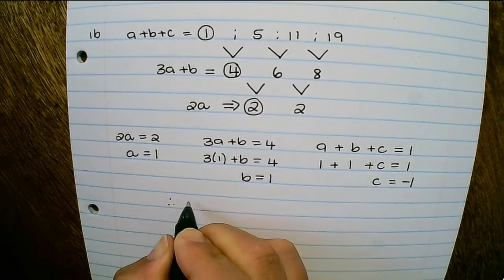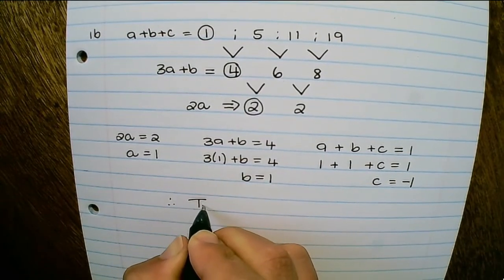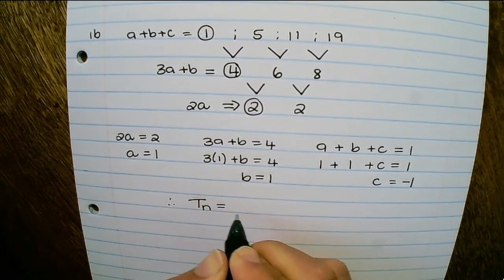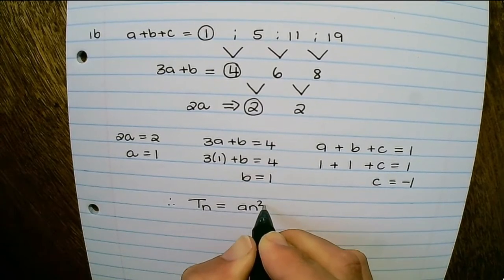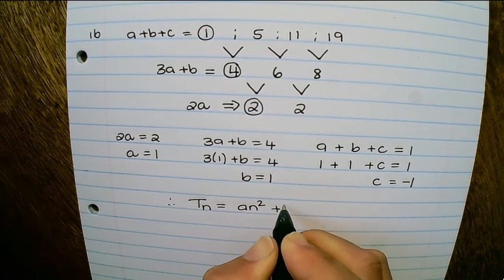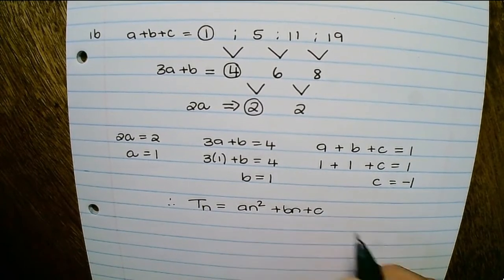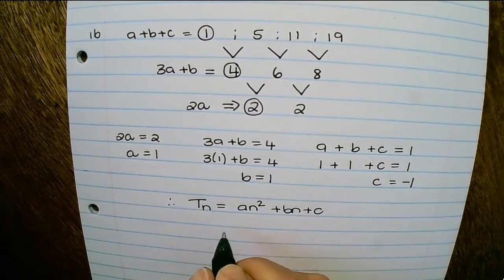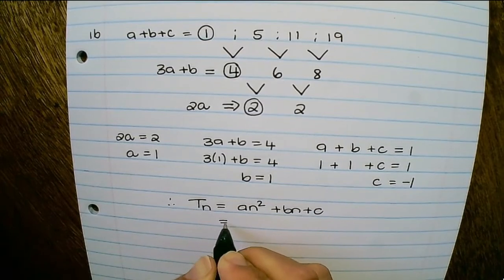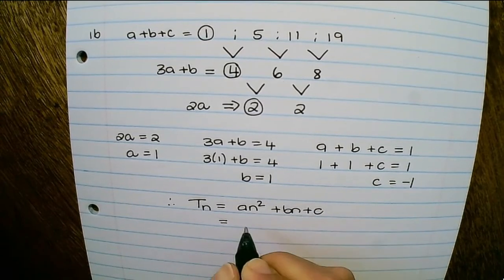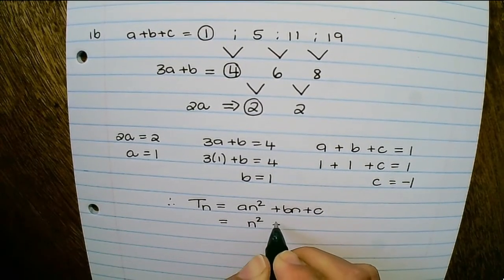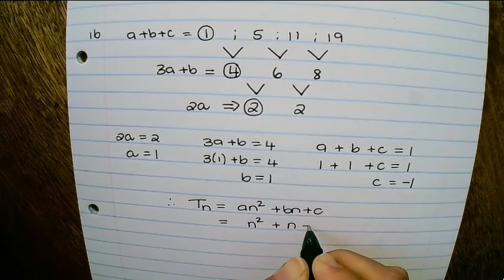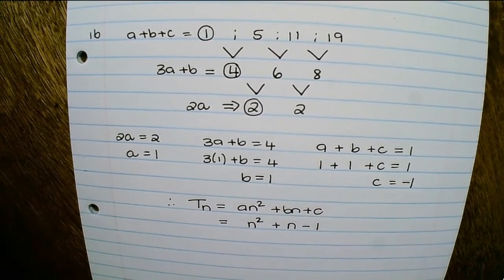Therefore the general term is an squared plus bn plus c, substituting the values we found. So the general term is n squared plus n minus 1.